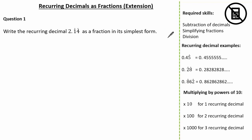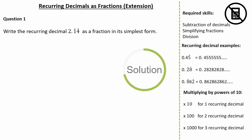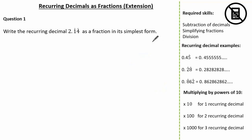This question asks us to write the recurring decimal 2.14 recurring as a fraction in its simplest form. Now looking back at the previous video, see if you can give it a go and press pause if you need. So let's start by identifying what 2.14 recurring means. As you can see, we have a dot above the 1 and the 4, so therefore the 1 and the 4 are the only digits that recur.